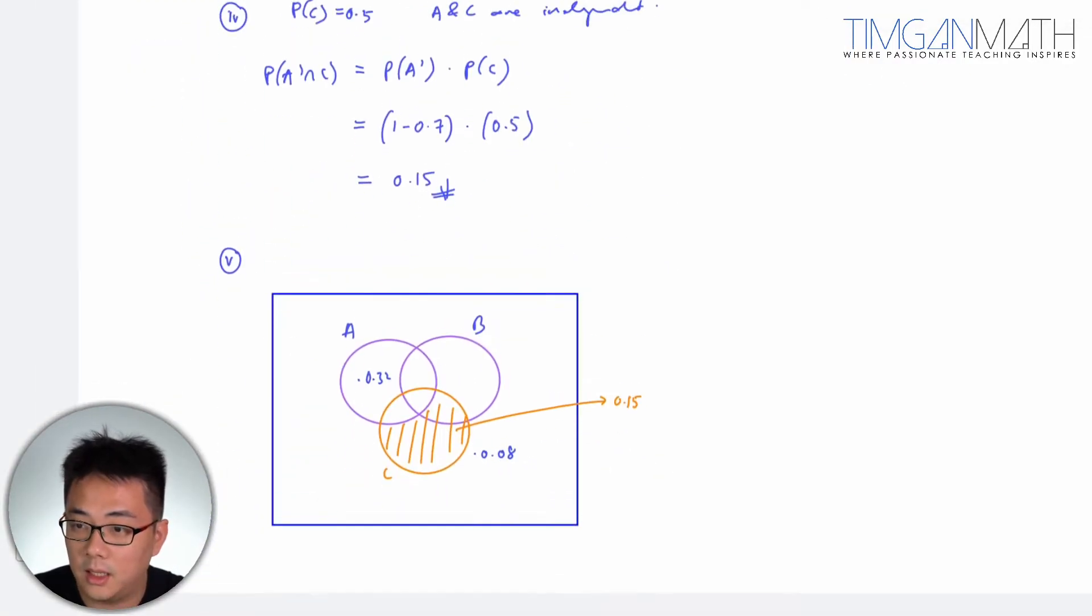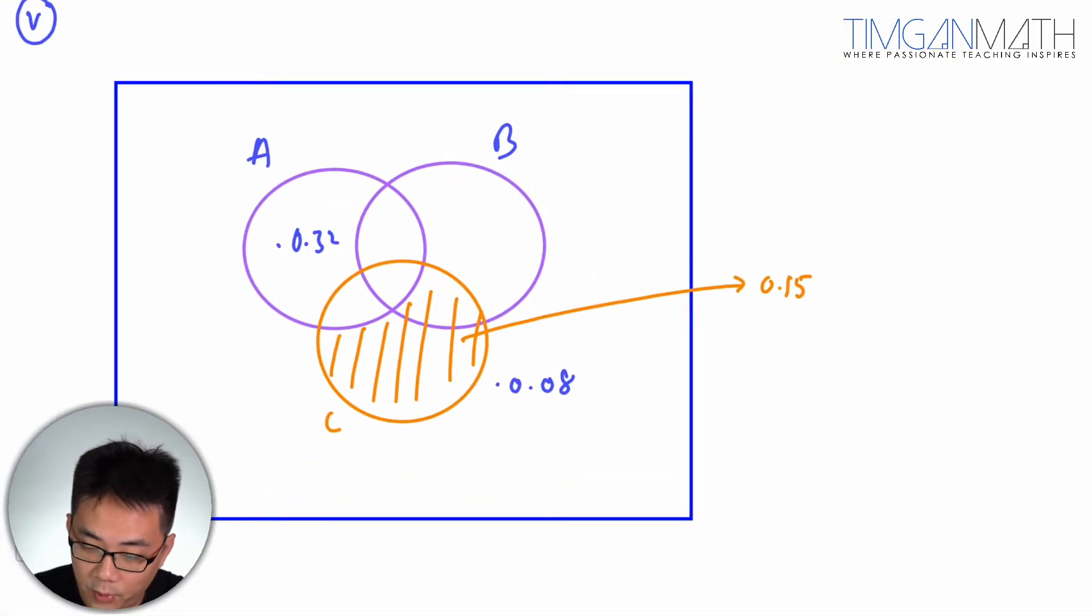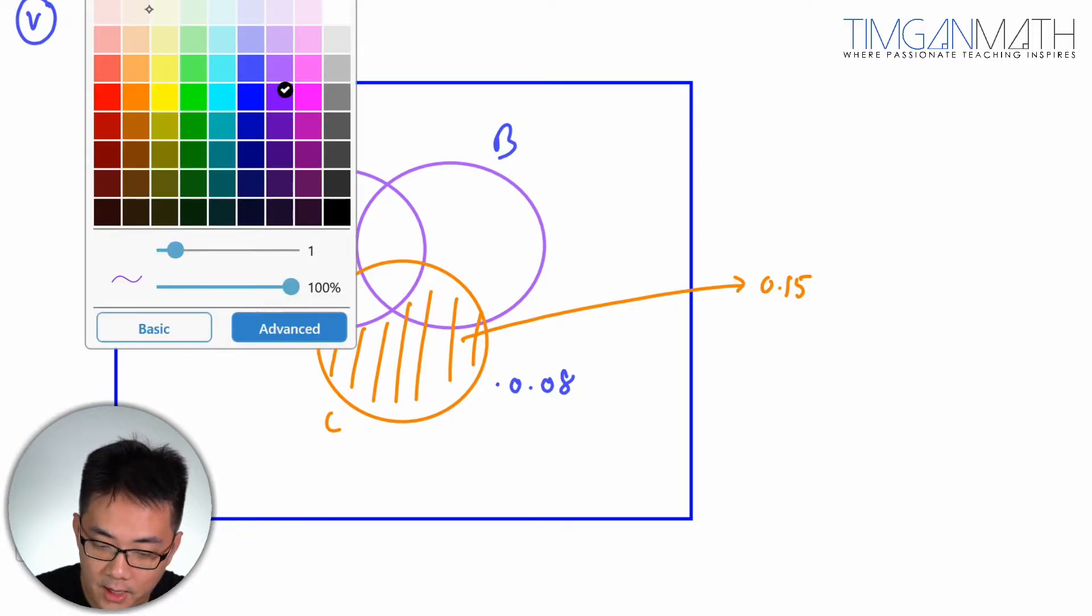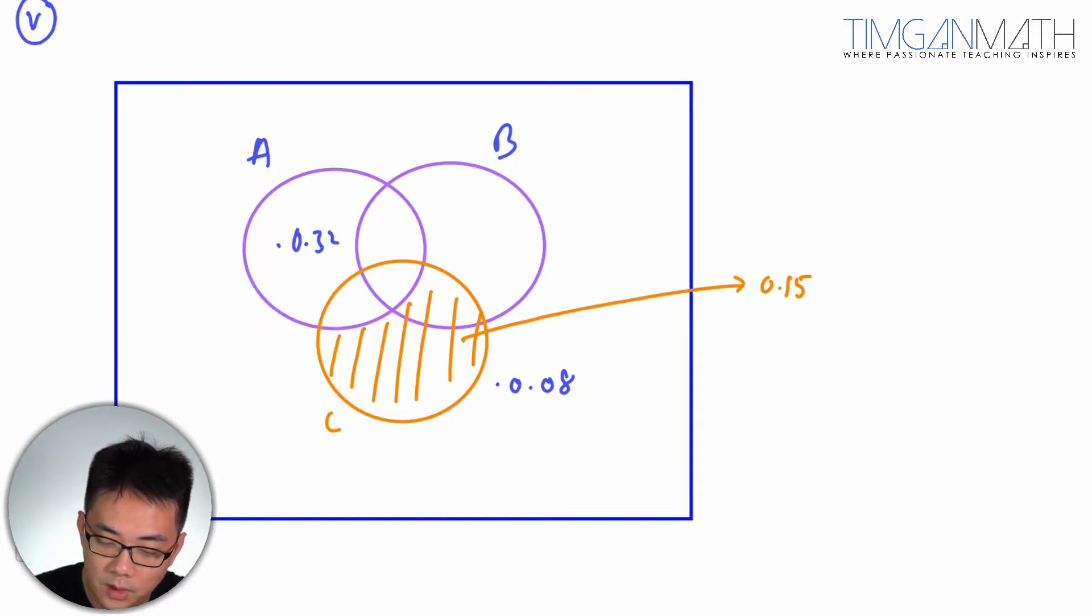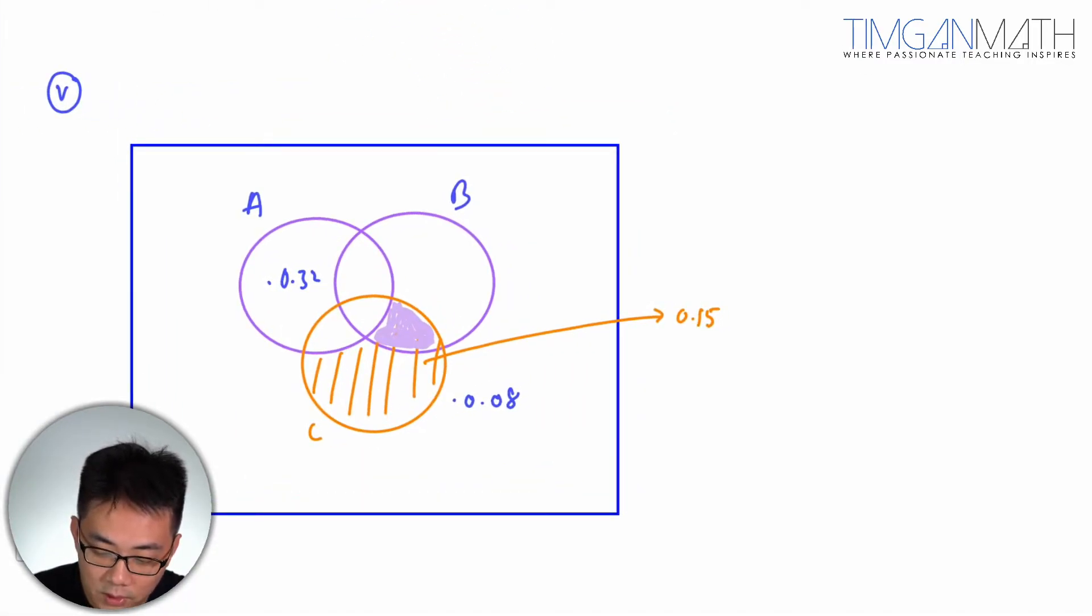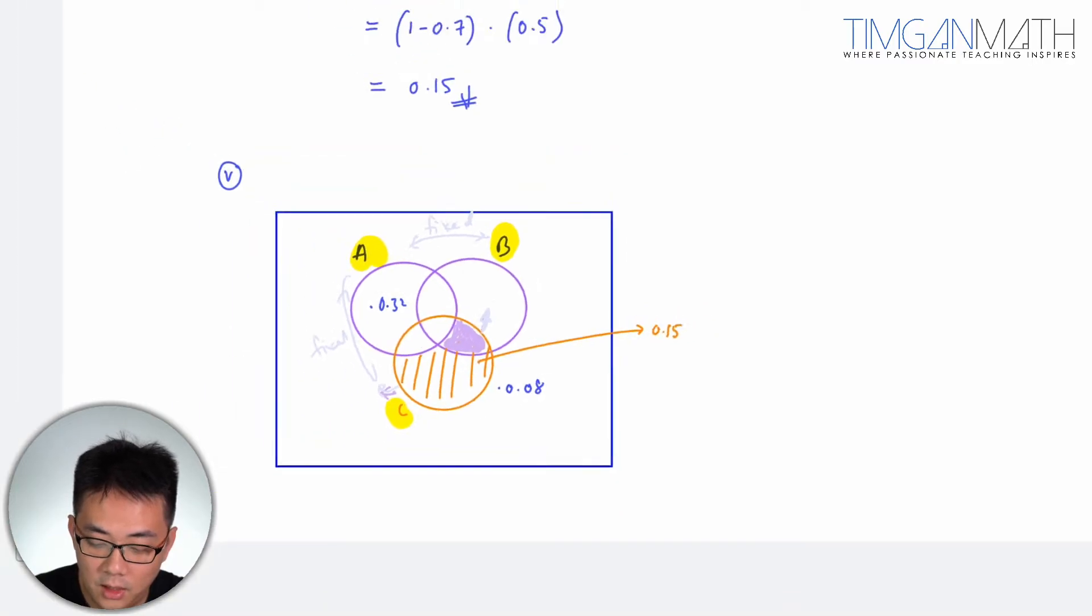So the question now is what is the inequality satisfied by A prime intersect B prime intersect C? A prime intersect B intersect C will be here, this portion here. Now what we're going to do is actually very simple. We're going to move this in and out because now you see the relationship between A and C is fixed. This is also fixed. So basically this is fixed. What is moving is between B and C. So this C here can actually move all the way in and out of the equation.